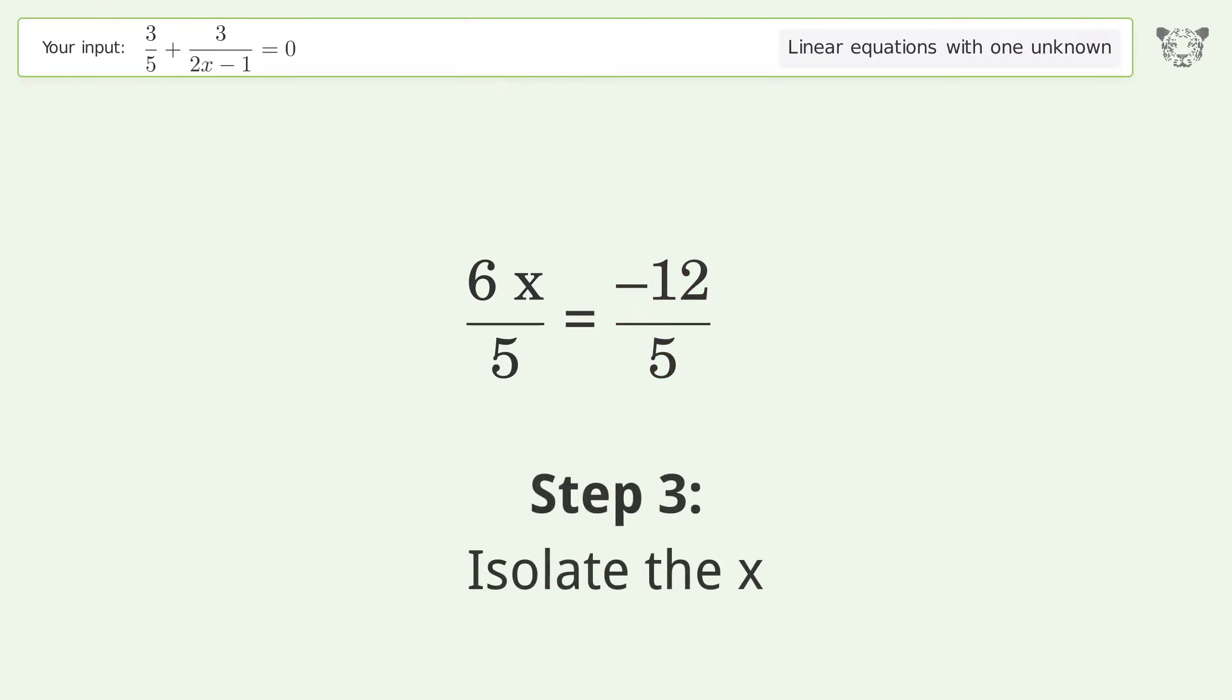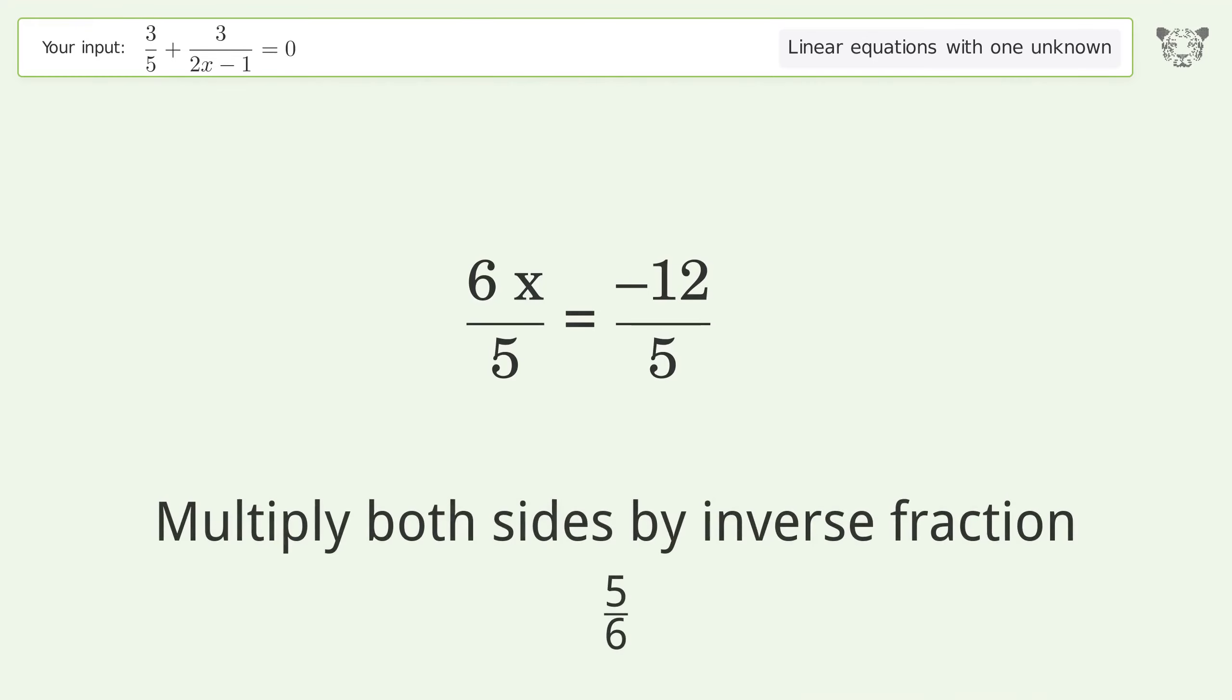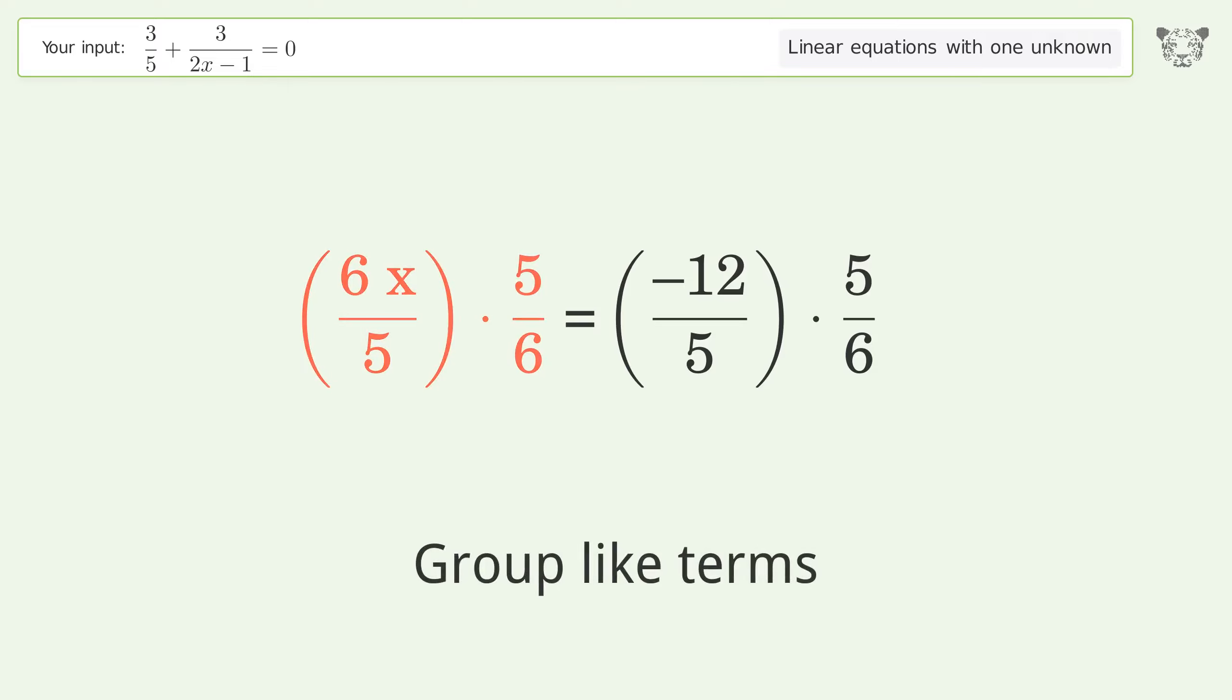Isolate the x. Multiply both sides by inverse fraction 5 over 6. Group like terms. Multiply the coefficients.